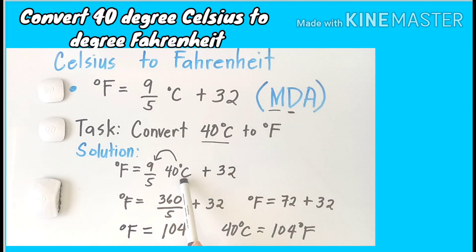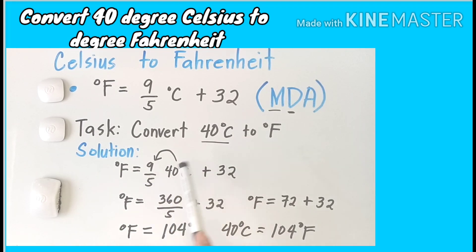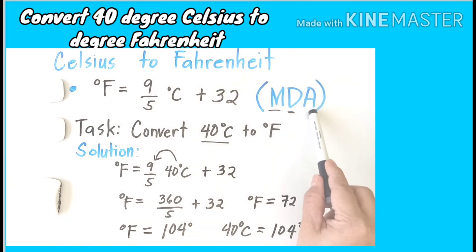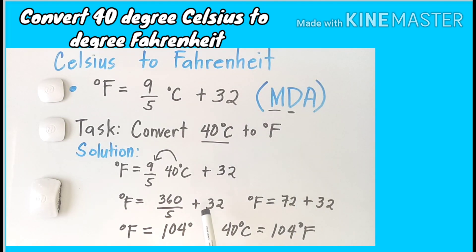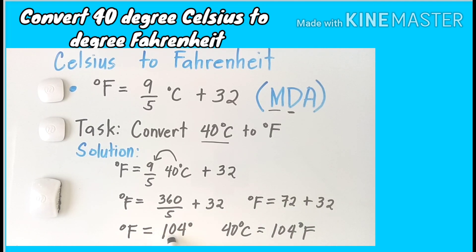The first step is to multiply 40 by 9. 40 times 9 gives you 360, divided by 5. 360 divided by 5 gives you 72. The third step is addition — add 32 to 72. Our equation is now degree Fahrenheit equals 72 plus 32, which gives you 104 degrees Fahrenheit. So 40 degrees Celsius is equal to 104 degrees Fahrenheit.